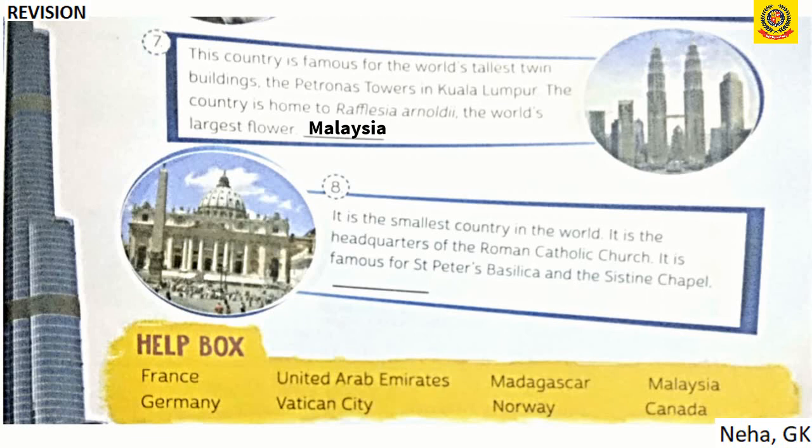Eighth, the smallest country in the world, headquarters of the Roman Catholic Church, famous for St. Peter's Basilica and the Sistine Chapel — the answer is Vatican City.